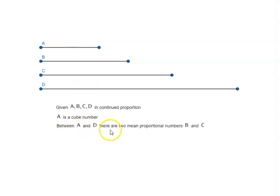between A and D there are two mean proportional numbers B and C. A and D are similar solid numbers.